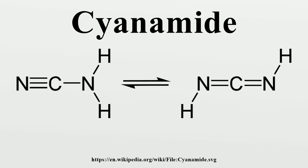Cyanamide is an organic compound with the formula CN2H2. This white solid is widely used in agriculture and the production of pharmaceuticals and other organic compounds. It is also used as an alcohol deterrent drug in Canada, Europe and Japan.